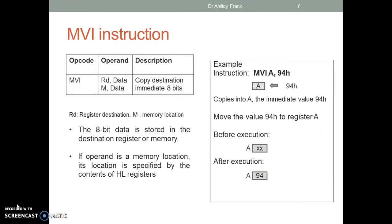MVI instruction copies an immediate 8-bit value into the destination register or memory. If the operand is a memory location, its location is specified by the HL register pair. Example: instruction MVI A,94 copies into A the immediate value 94. Before execution, A could have a random number. After execution, the value 94 is copied to A.